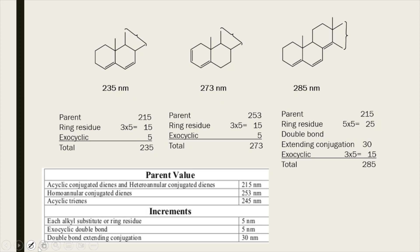In the next set of examples, for the first molecule the conjugated system corresponds to a heteroannular diene with a parent value of 215 nm. There are three ring residues (value = 15 nm) and one exocyclic double bond — the double bond is exocyclic to ring B — giving 5 nm. The total lambda max value is 215 + 15 + 5 = 235 nm.